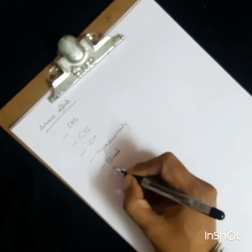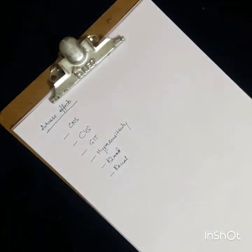There are some renal adverse effects. Inhibition of PGE2-mediated vasodilation in response to AT2 causes renal insufficiency. It may cause renal failure and hyperkalemia. Additionally, analgesic nephropathy may occur on chronic use.